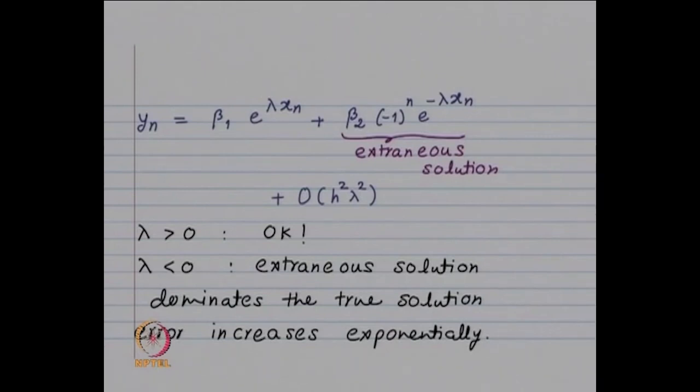Last time we looked at a specific example y' = −2y + 1, and the numerical results showed that for Euler's method the error goes on decreasing, whereas for the midpoint method the error instead of decreasing went on increasing over the interval 0 to 4. Euler's method and Runge-Kutta method do not have this problem regardless of the sign of λ.